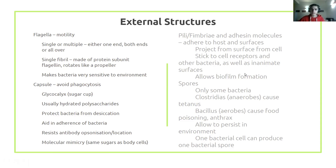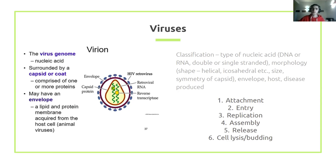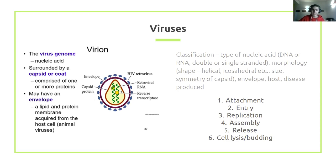Now moving on to viruses. Viruses are not technically alive — they're essentially just DNA or RNA inside a protein coat. That outer coat is called a capsid, and sometimes there's also an envelope — a lipid layer around the capsid. HIV is a good diagrammatic example of this. Viruses are classified by the type of nucleic acid they contain and whether it's single-stranded or double-stranded DNA or RNA.